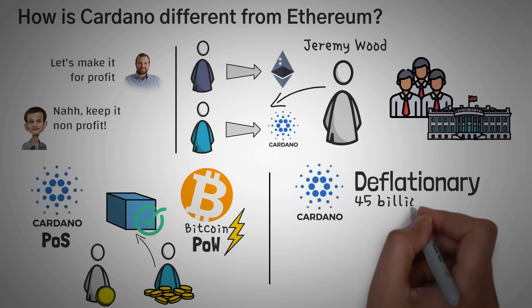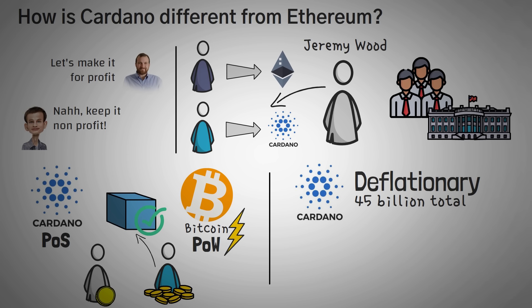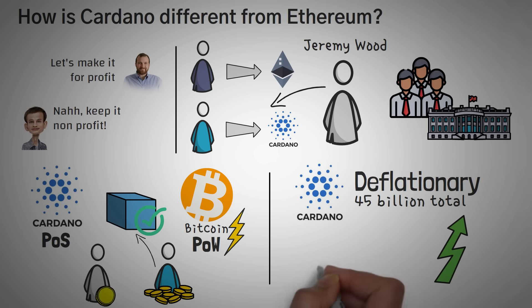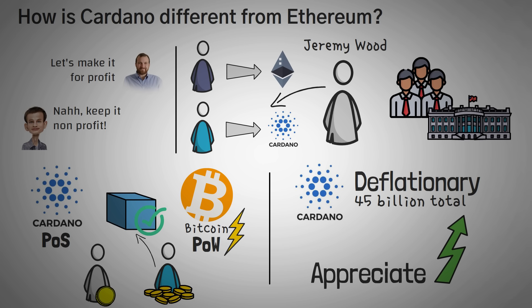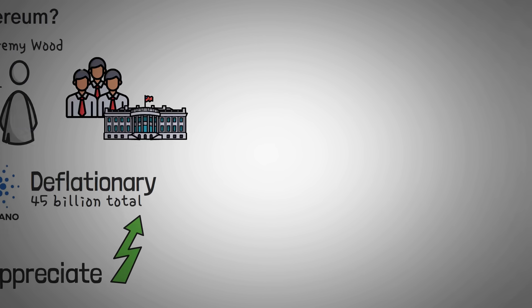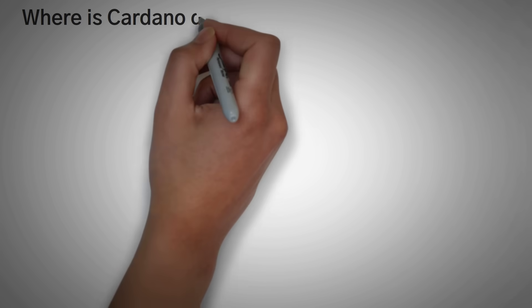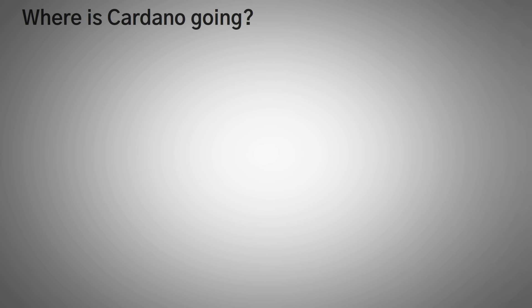Another important difference is that like Bitcoin, Cardano is deflationary. This basically means there is a fixed amount — in the case of ADA, 45 billion total ADA coins will be minted — as opposed to Ethereum, which mints more and more Ethereum every year. From an economic perspective, that would generally mean that, all other things being equal, ADA should increase in value, or appreciate, more than Ethereum. However, that is as close to price speculation as we will get today. With the future in mind, let's take a look at where Cardano is being used in the real world, and where it might be used in the future.